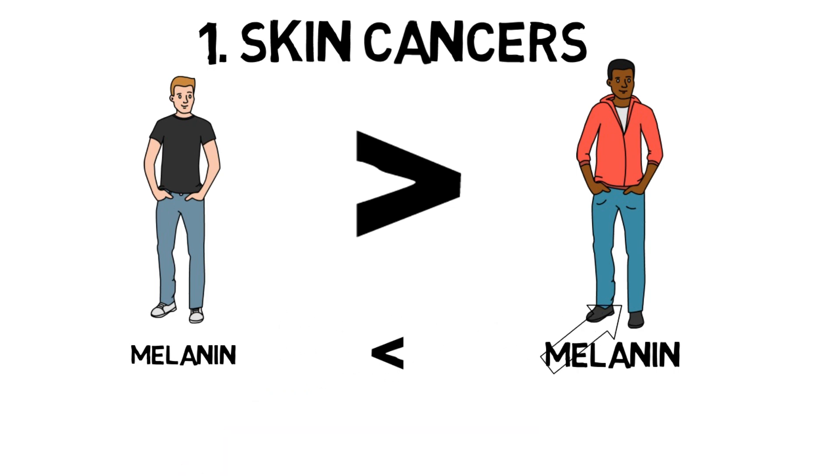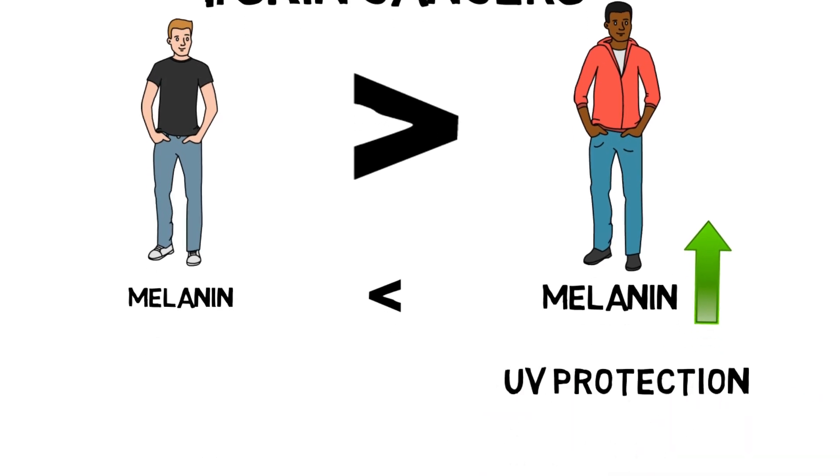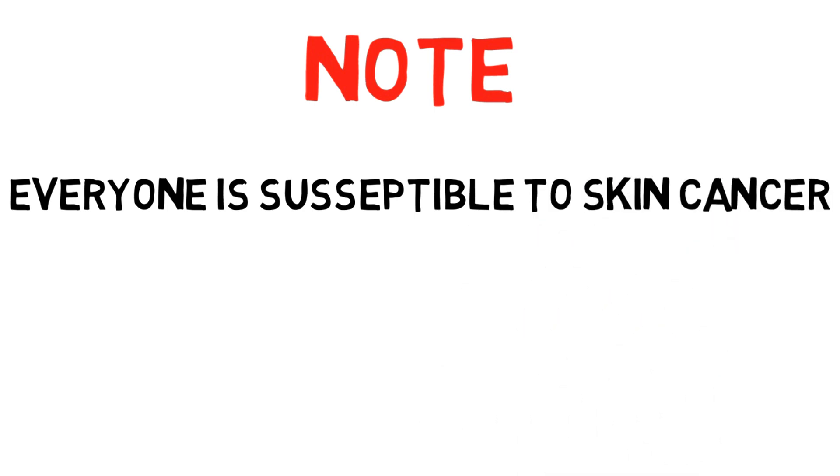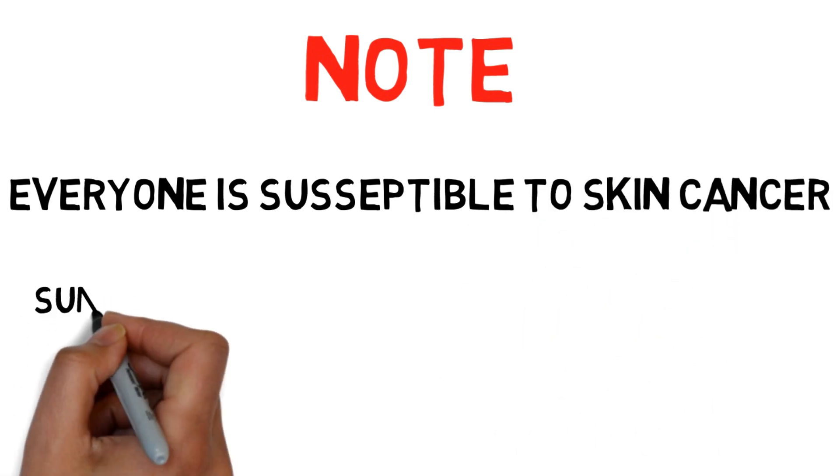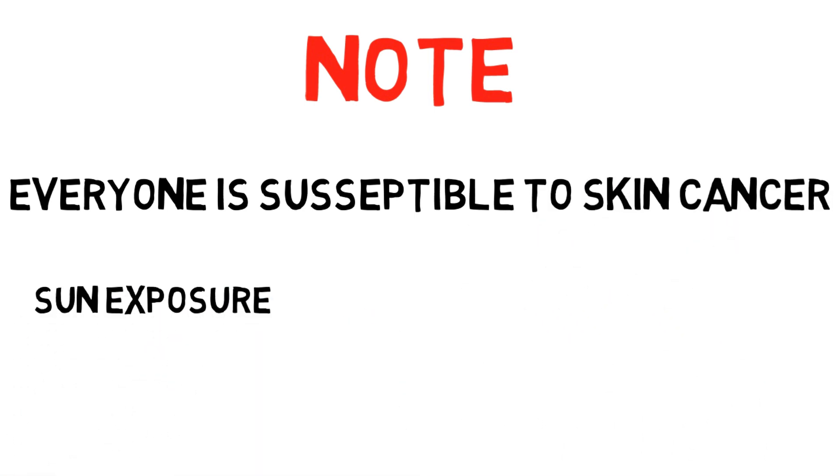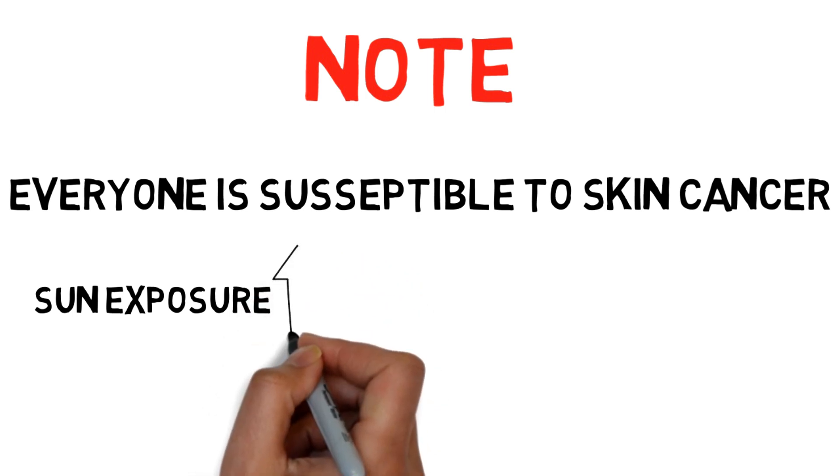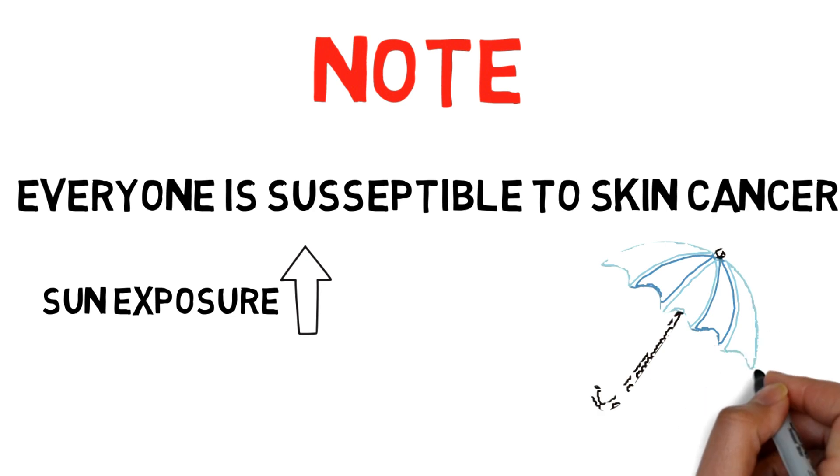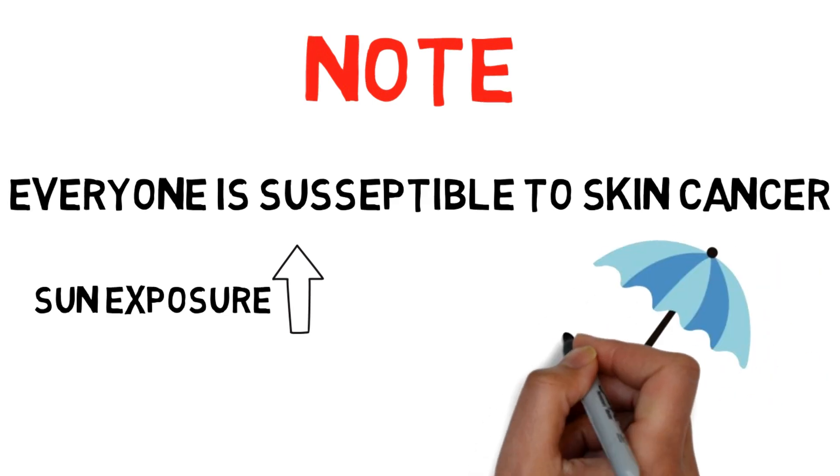Melanin also protects the skin from ultraviolet radiation from the sun. Fair skin people have less amount of melanin in their skin, and hence they are likely to suffer from skin cancer. Note that regardless of skin color, everyone is susceptible to develop skin cancer if their exposure to sunlight is sufficiently intense and continuous. Therefore, it is advised to use sunscreens for people who work in direct sunlight for long periods.